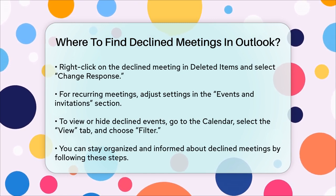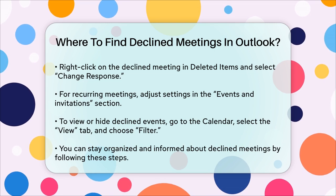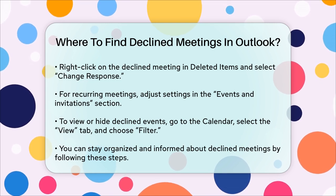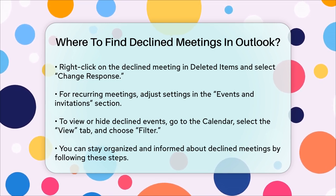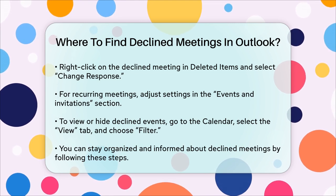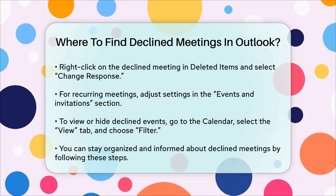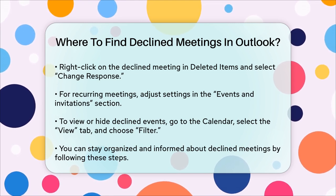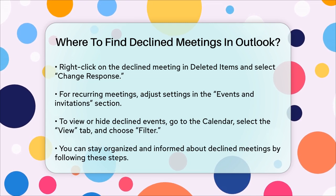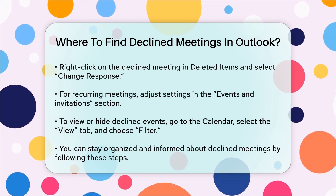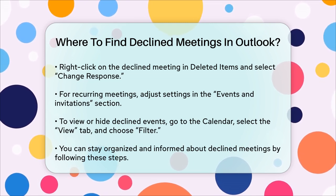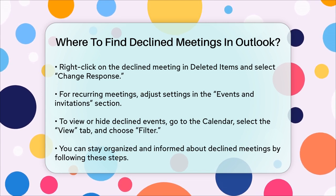To view or hide these declined events, go to the calendar, select the View tab, and then choose Filter — Hide Declined Events — or uncheck it to view all declined events. By following these steps, you can keep track of all your declined meetings in Outlook, ensuring you stay organized and informed about events you've chosen not to attend.